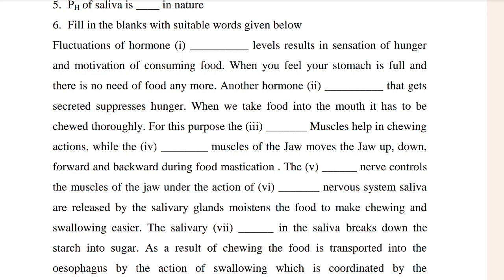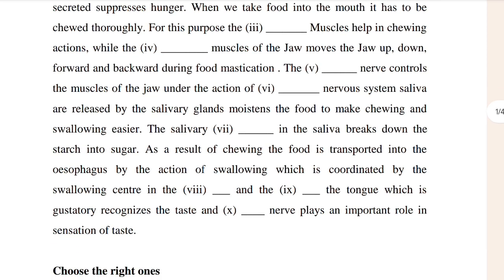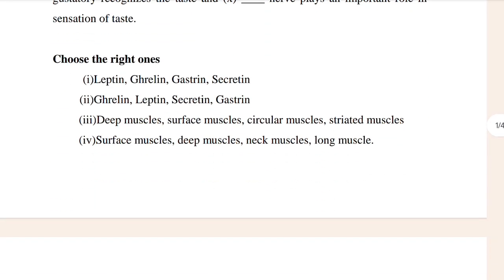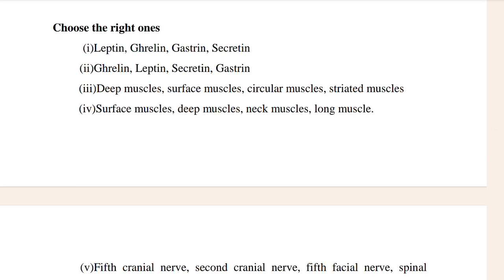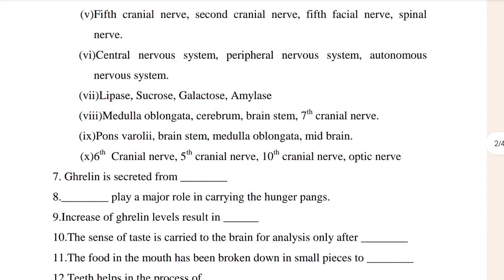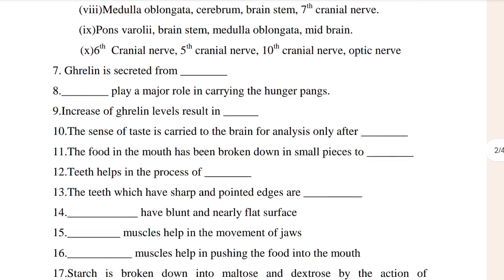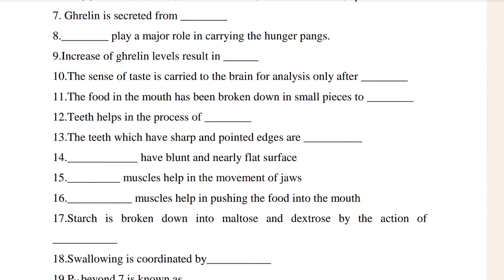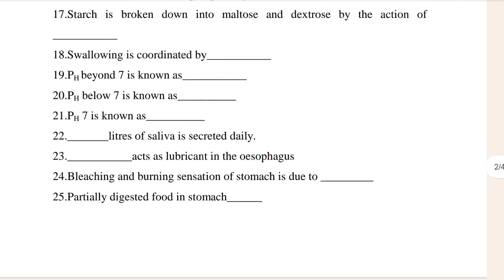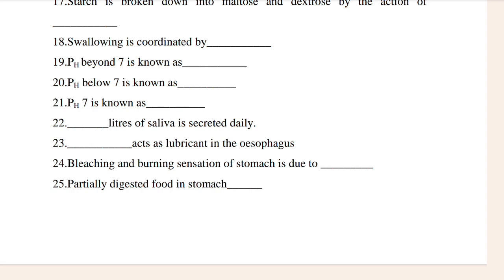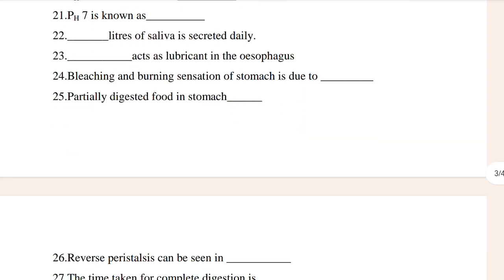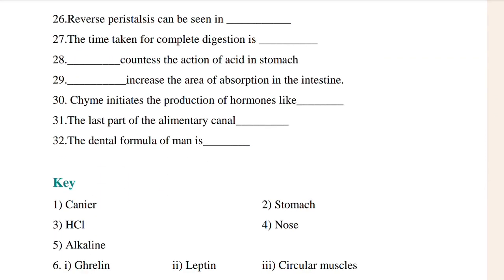If it is clear for you, then you can see the choose-the-right-one section — that is objective type questions. Then you can see questions 7 to 17, then till 18 to 25, then 26 to 32 you can see.